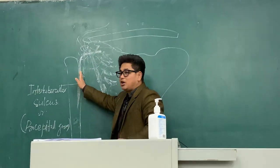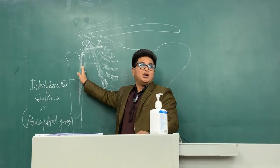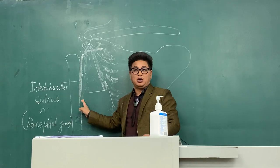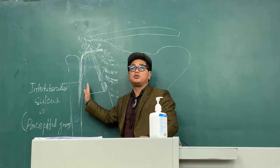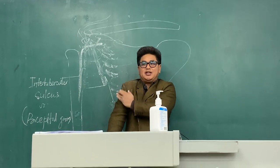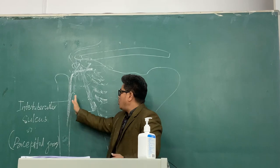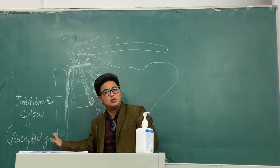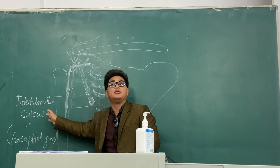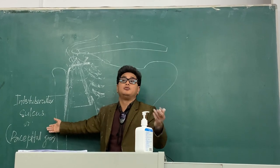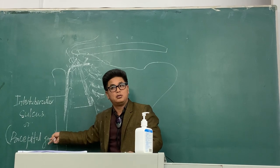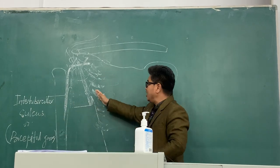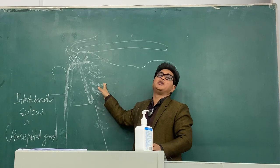Here we are concerned with the lateral wall of the axilla. The lateral wall of the axilla is actually formed of the intertubercular sulcus, also known as the bicipital groove. So the lateral wall of the axilla is formed of the intertubercular sulcus, and the medial wall of the axilla is formed of the upper ribcage plus serratus anterior muscle.